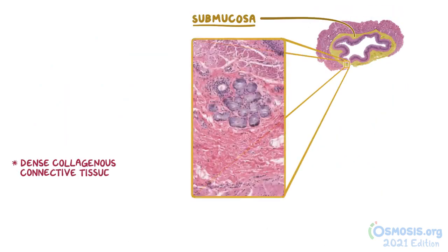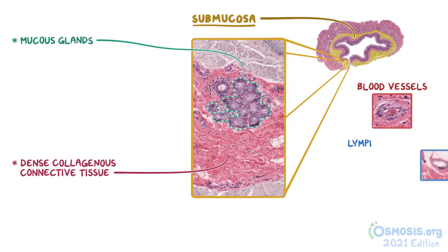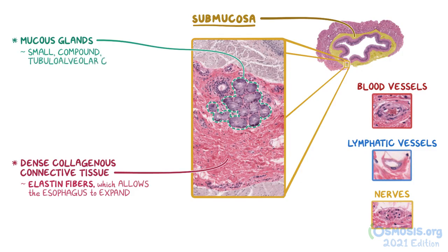The next main layer is the submucosa, which consists mostly of dense collagenous connective tissue that stains pink. But the submucosa also contains mucous glands, blood vessels, lymphatic vessels, and nerves. Within the connective tissue, there are also elastin fibers, which allow the esophagus to expand when food passes through it. The mucous glands are visible here, and they are small, compound, tubulo-alveolar glands that secrete mucus that stains purple.